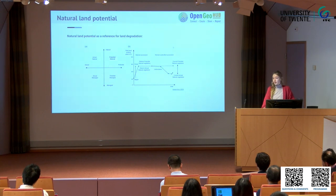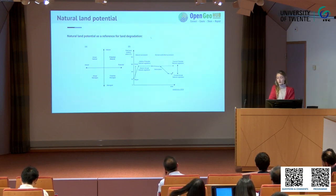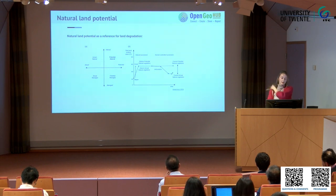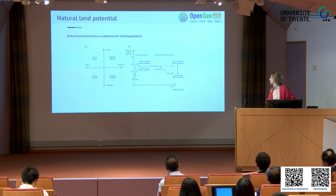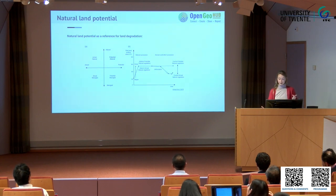How do we measure land degradation? For that we need a reference. What is commonly taken as a reference are the last few years as a baseline — usually the last 15 years, or the immediate surrounding. But as you can see on this example graph, if we only go a few years back we don't capture the full potential of that land. So what if we could actually map the natural land potential and use that as the reference for land degradation?